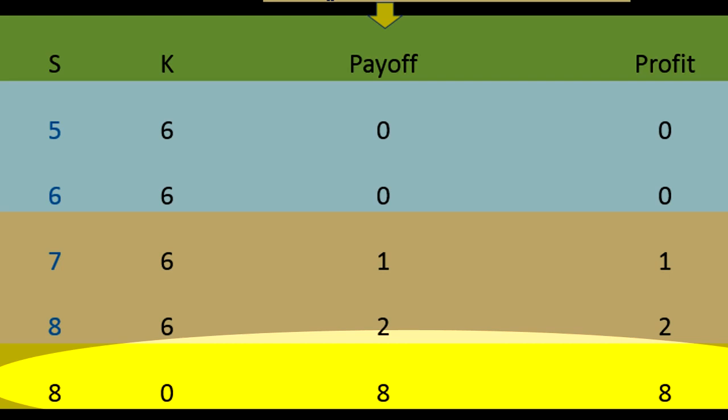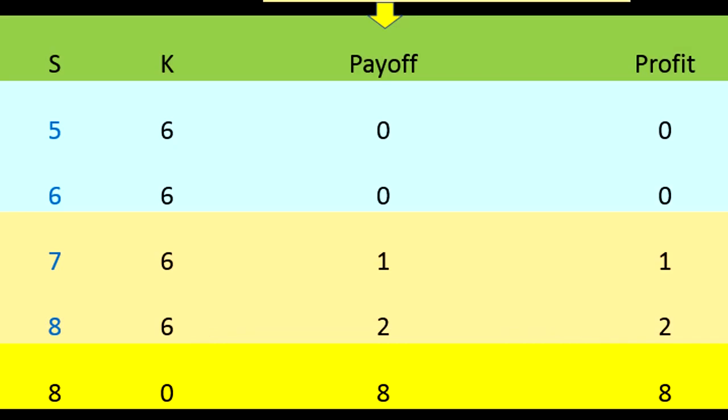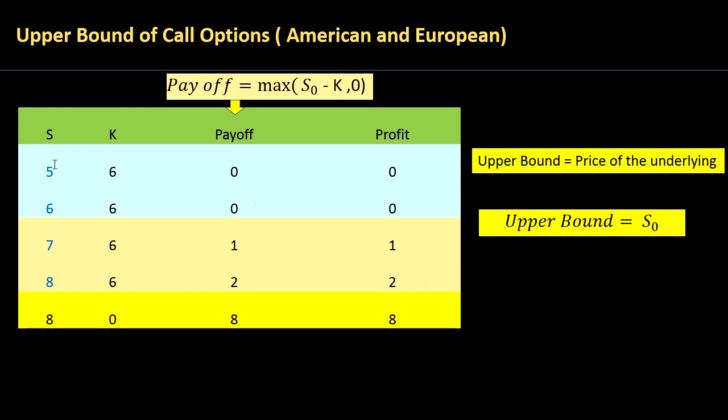So if you want to buy this call option, the maximum you will pay is the value of the underlying. You can see the maximum value, in other words the upper bound of a call option, is S0, which is the spot price of your underlying.